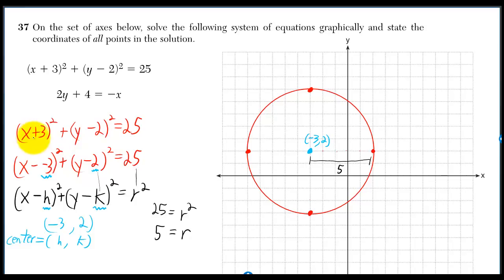But the next time you see x plus a number, h is just the negative of that number. And I've already graphed this circle with center negative 3 comma 2 and radius 5.